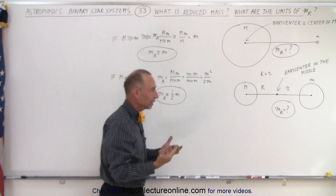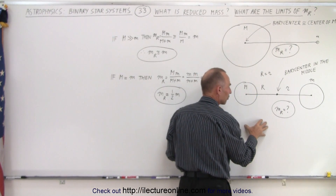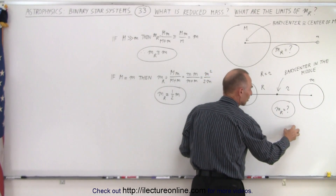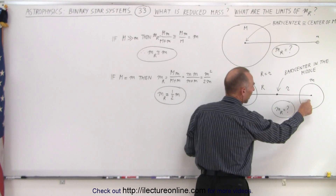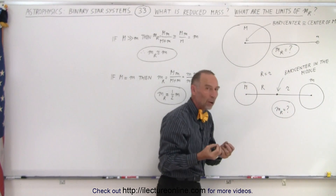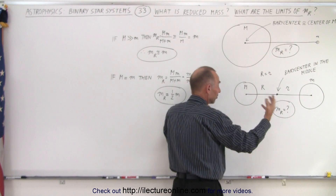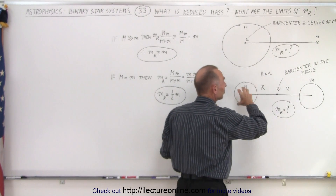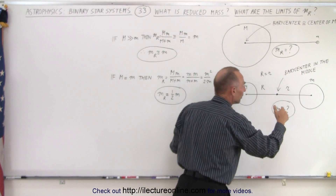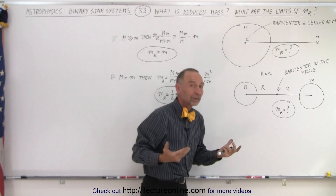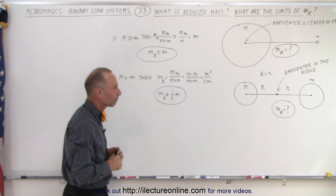In other words, in order to get the F equals mA equation to work out and the force of gravity to equal mass times acceleration, we have to replace the small mass by the reduced mass, which is now one half the small mass — and the same for the large mass since they're equal. We would need to use the reduced mass for both of them, depending upon which object we want to look at for its motion and the equations associated with that object.